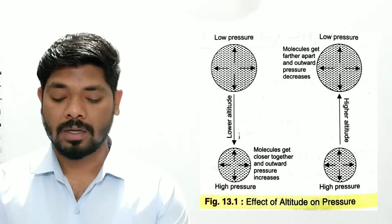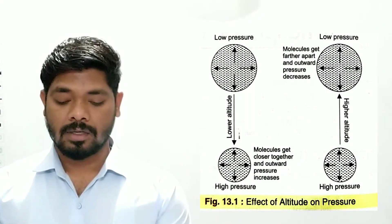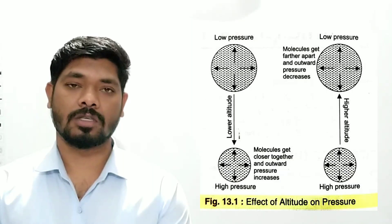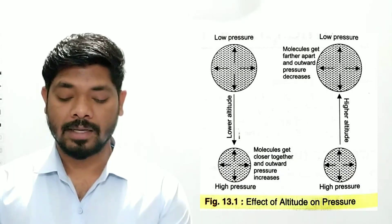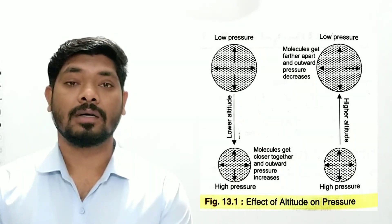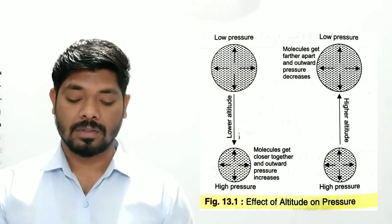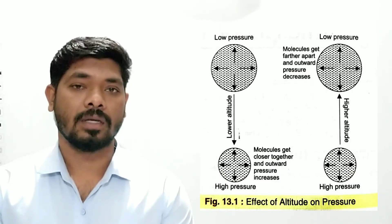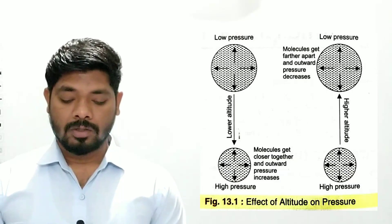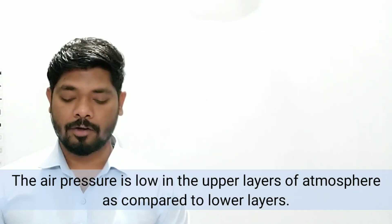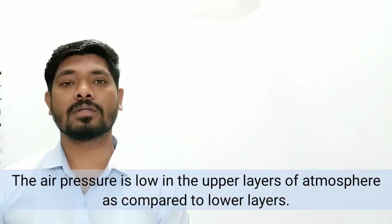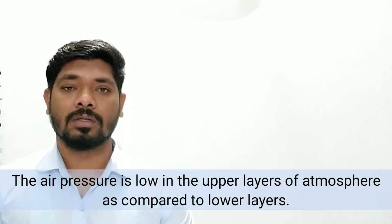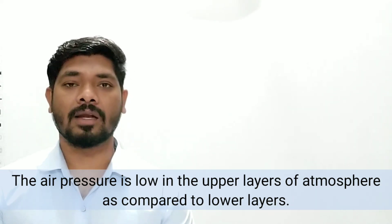When you move towards the upper altitude, as shown in the second diagram, the molecules get farther apart and outward pressure decreases. The upper diagram is a bit bigger than the lower one. The molecules are expanding and get further apart, making low pressure at height. Generally, air pressure is low in the upper layer of the atmosphere compared to lower layers, because gravity confines air towards the surface of the earth.